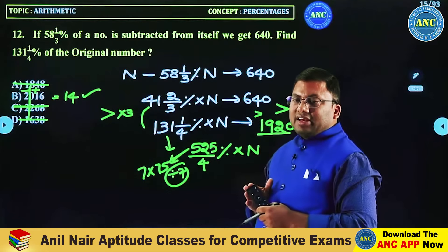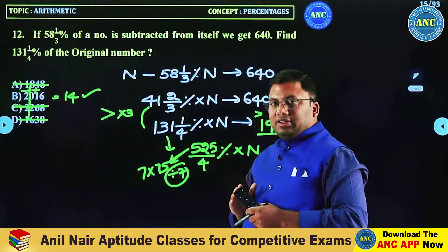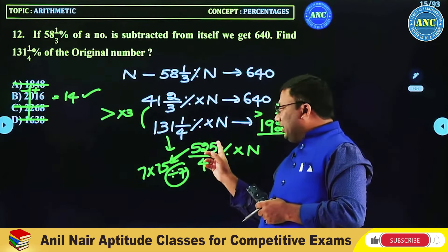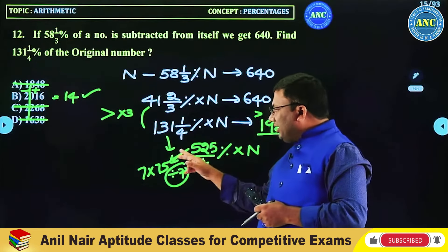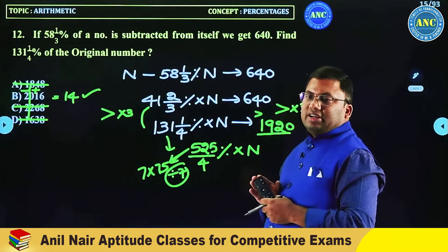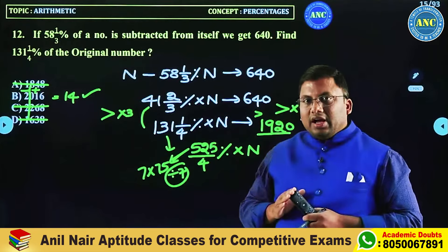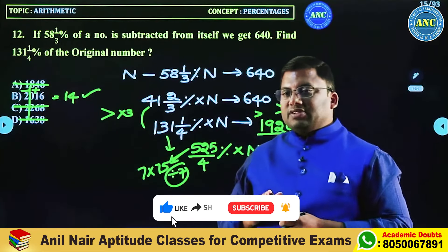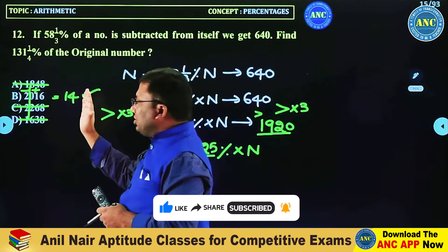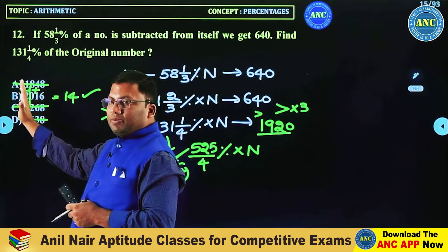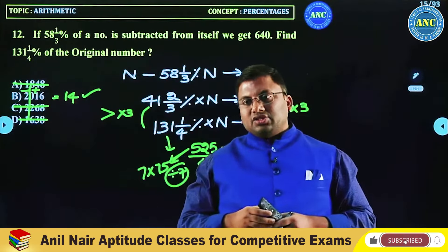The answer should be greater than 1920 — A is out, D is out. 131 and 1/4 is 525/4, which is divisible by 7. So the answer should be divisible by 7. What is the divisibility rule of 7? Take a group of 3 digits, alternatively plus minus: 16 minus 2 = 14 — it is 40, so the 12th one is clear.